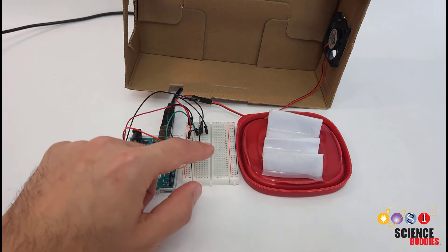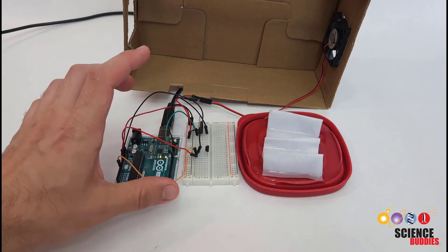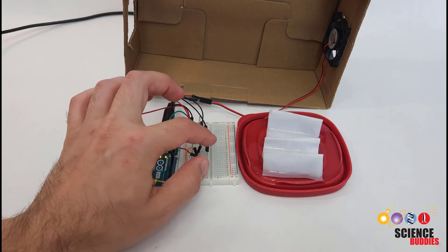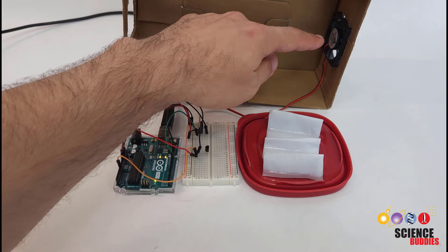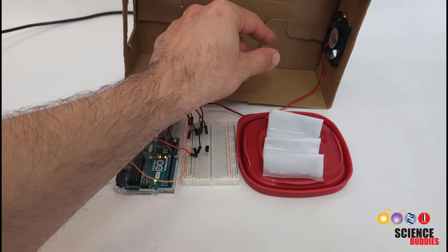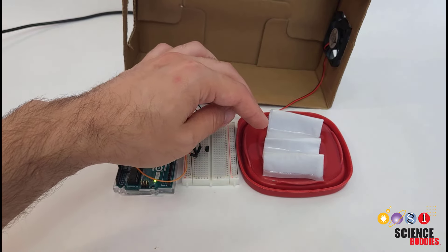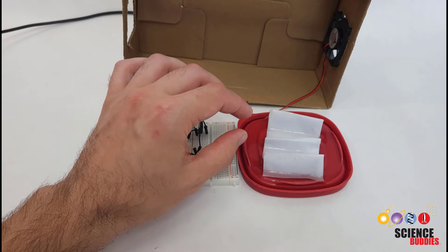How this system works is the temperature sensor will monitor the temperature and the Arduino is programmed such that when the temperature gets too hot, this fan will turn on. It is going to suck fresh air in from the outside into the box, blow the air over the water, which is going to cause some of the water to evaporate.